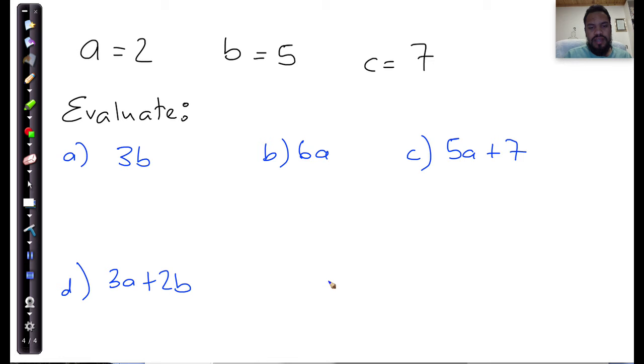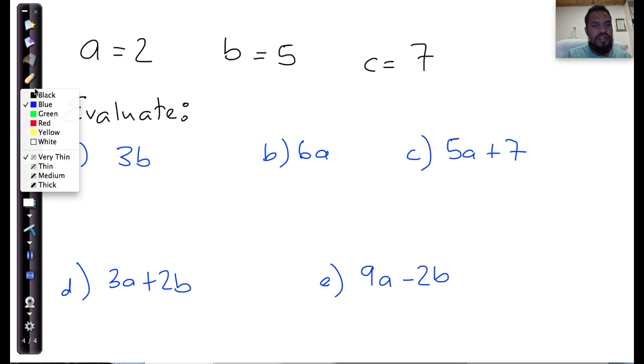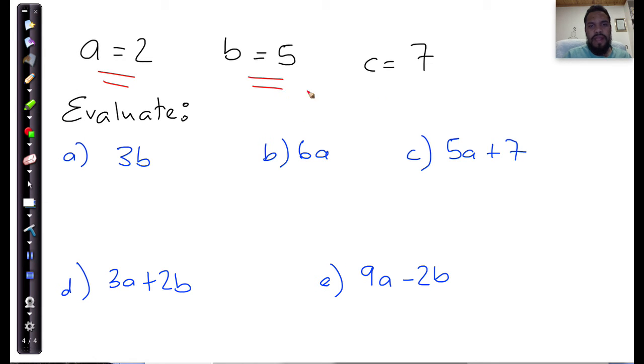And let's make e, that should be e, let's make e 9a minus 2b. And we're going to work at the solutions of each of these given the values above. So a equals 2, b equals 5, and c equals 7.